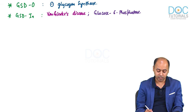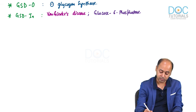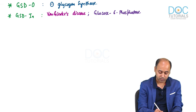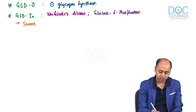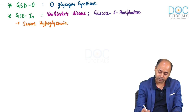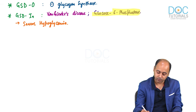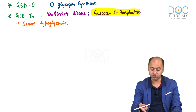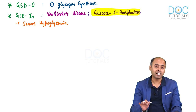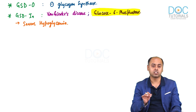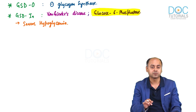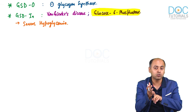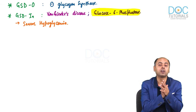How do we identify GSD type 1A or Von Gierke's disease? The two most characteristic findings are: first, the hypoglycemia is very severe. The glucose-6-phosphatase enzyme is required in glycogen breakdown in the liver — in the last step to release glucose-6-phosphate to glucose. This enzyme is also required in gluconeogenesis, where the last enzyme is again glucose-6-phosphatase. Both glycogenolysis and gluconeogenesis help support blood glucose levels.